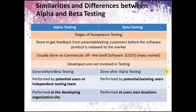Here you can see similarities and differences between alpha and beta testing. What are similar? Both alpha and beta testing are stages of acceptance testing. They are done to get feedback from potential or existing customers before the software product is released to the market. It is usually done on commercial off-the-shelf software for mass market. Also, developers are not involved in alpha and beta testing.